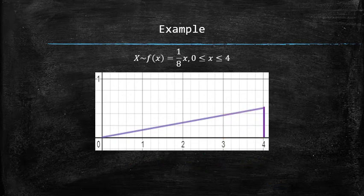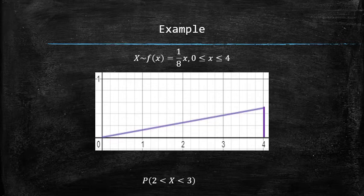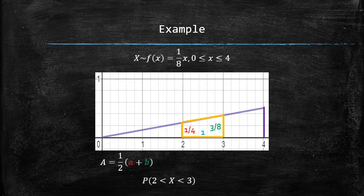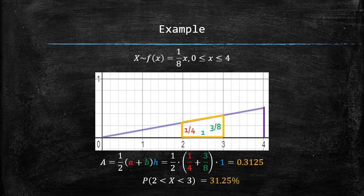To find the probability that x is between 2 and 3, we will look for the area under the curve between 2 and 3. This region is a trapezoid with bases 1/4 and 3/8 and height equal to 1. The area can be found using the formula for the area of a right trapezoid and is equal to 0.3125 or 31.25%.